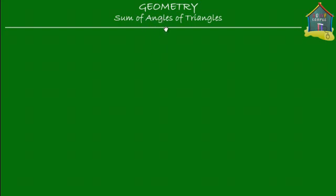Welcome to homecampus.com.sg. In this lesson we'll find out that the sum of angles of triangles is equal to 180 degrees.